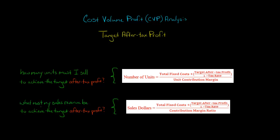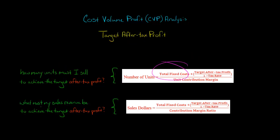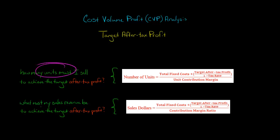In this video, I'm going to show you how to find out how many units you need to sell in order to achieve a target after-tax profit. Here's the formula we're going to use: take the company's fixed costs, add to it the after-tax profit divided by 1 minus the company's tax rate, then divide that entire numerator by the contribution margin per unit, also called the unit contribution margin.